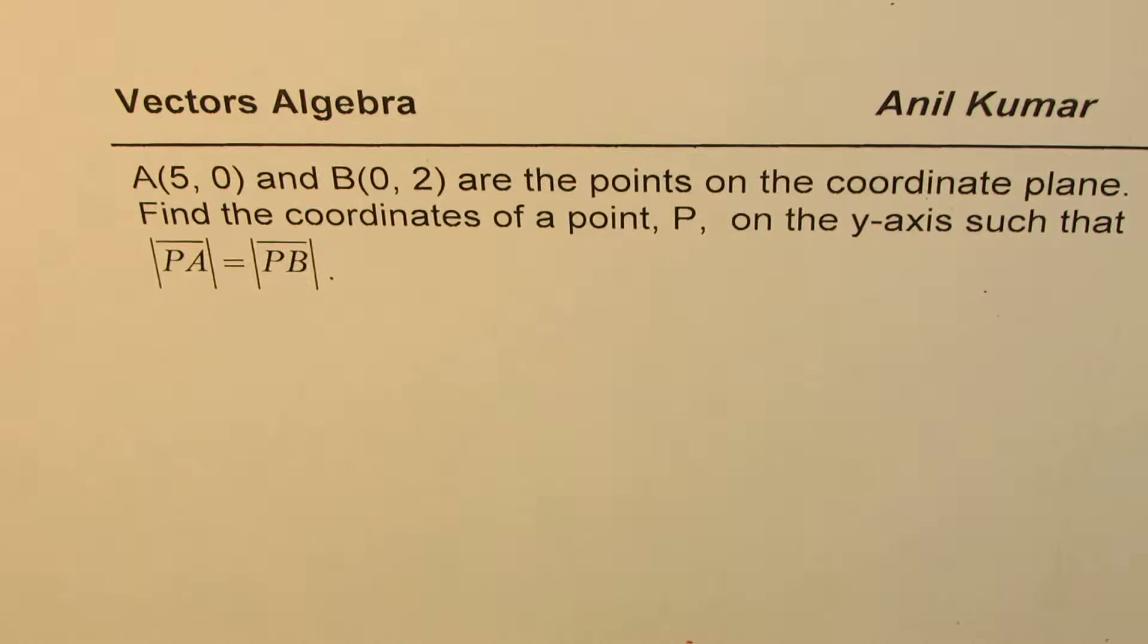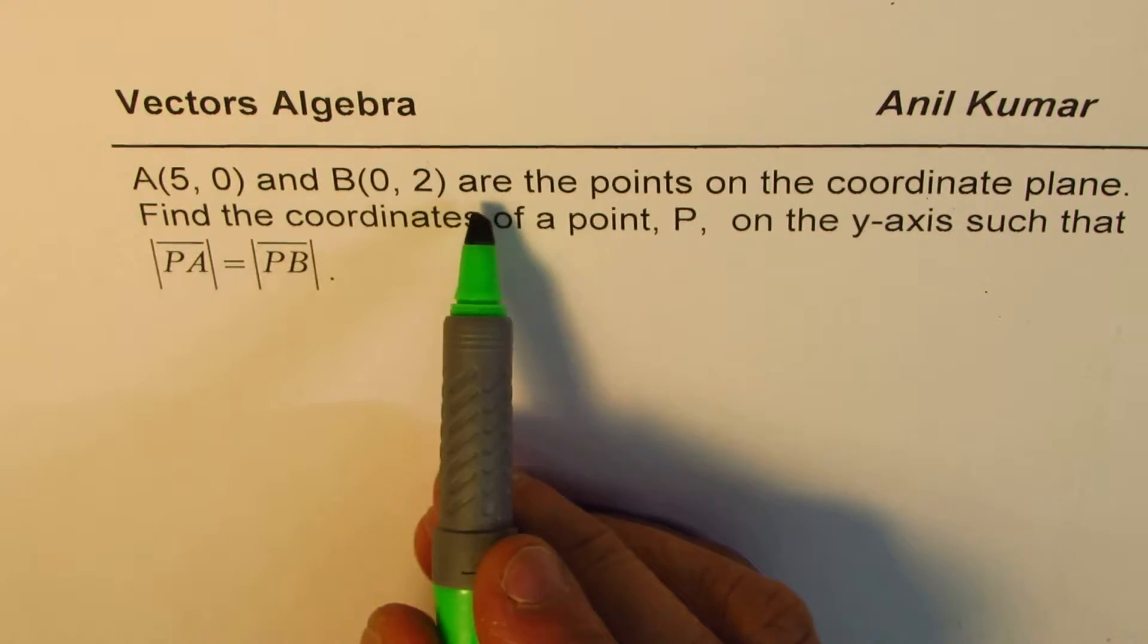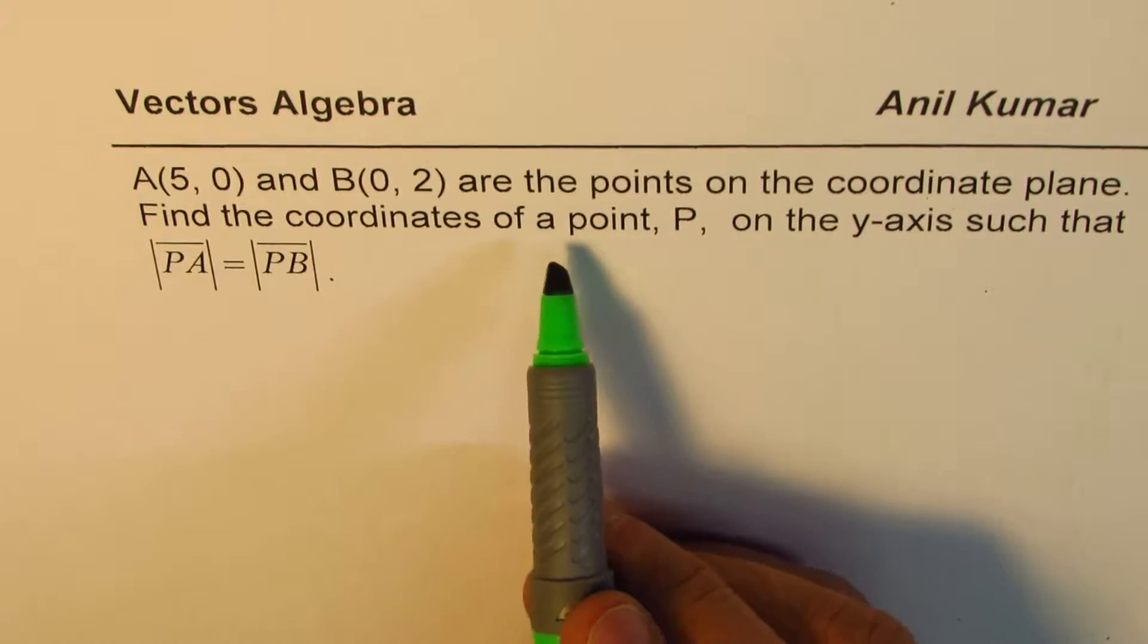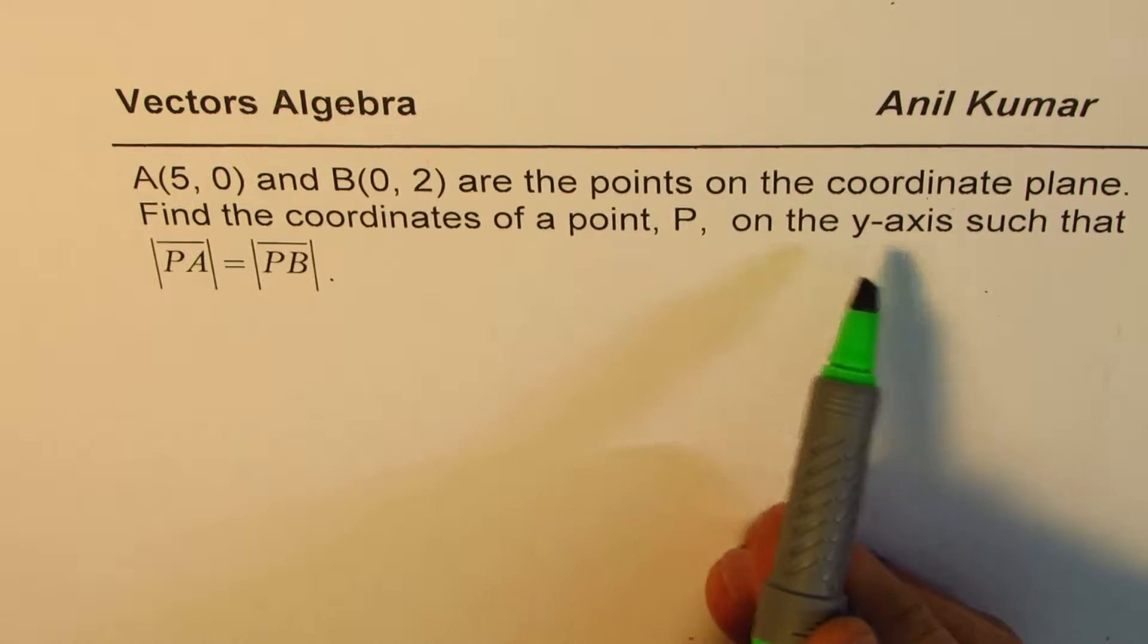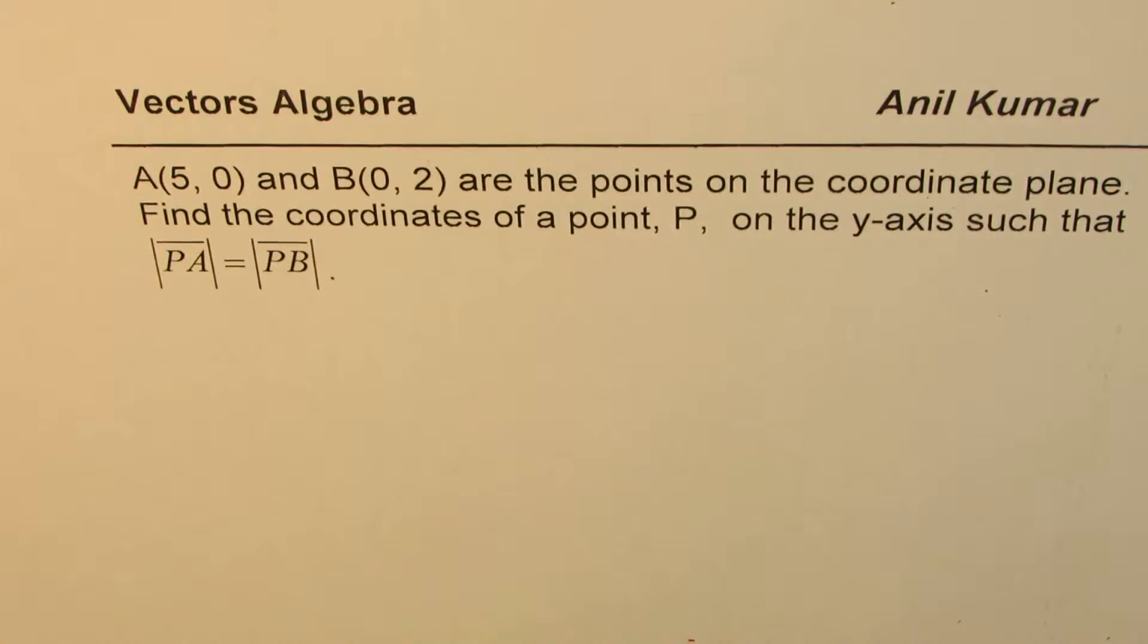I'm Anil Kumar and here is a question on vectors. A(5, 0) and B(0, 2) are the points on the coordinate plane. Find the coordinates of a point P on the y-axis such that PA magnitude equals magnitude of PB. You can always pause the video, answer the question, and then look into my suggestions.